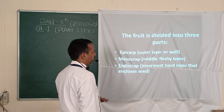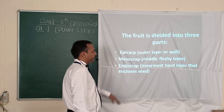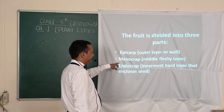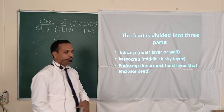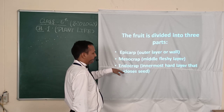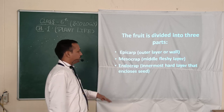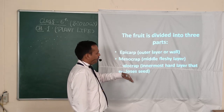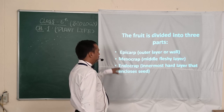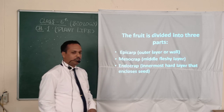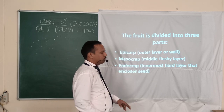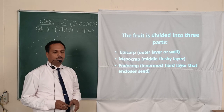There are mainly three parts of a fruit. The first is the epicarp, the second is the mesocarp, and the third is the endocarp. The epicarp is the outer layer of the fruit. The mesocarp is the middle or fleshy layer of the fruit. The endocarp is the innermost layer of the fruit that encloses the seed.